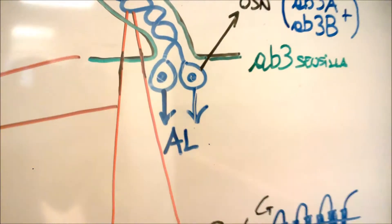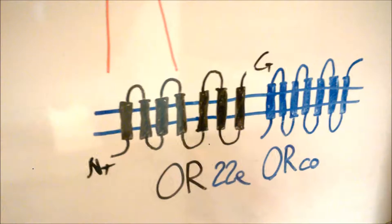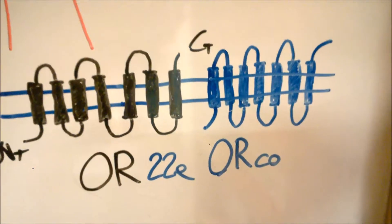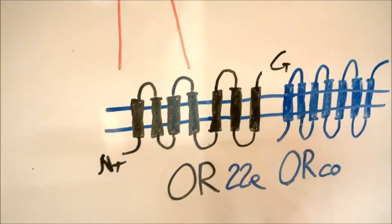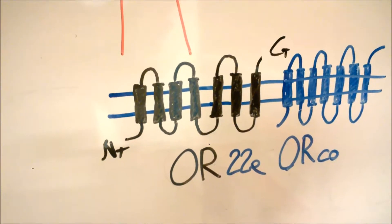Generally, each olfactory sensory neuron expresses, together with a core receptor, only one type of olfactory receptor. For example, AB3A expresses OR22A.